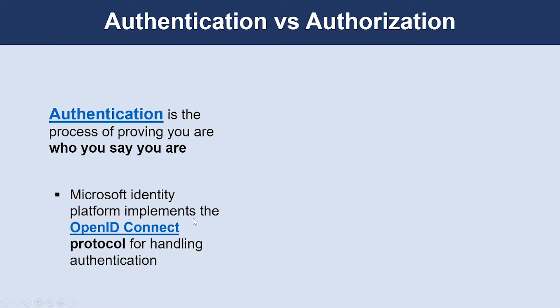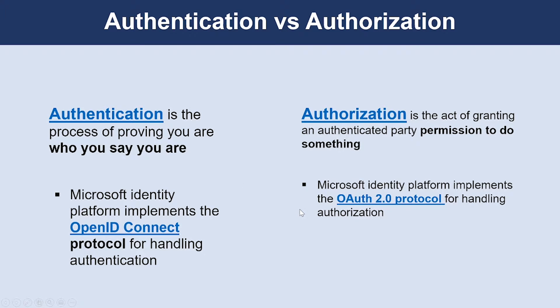First, let's understand what's the main difference between authentication versus authorization. Authentication is the process of proving you are who you say you are. Microsoft Identity Platform implements the OpenID Connect protocol for handling authentication. Authorization is the act of granting an authenticated party permission to do something. It specifies what data you are allowed to access and what you can do with that data. Microsoft Identity Platform implements the OAuth 2.0 protocol for handling authorization.